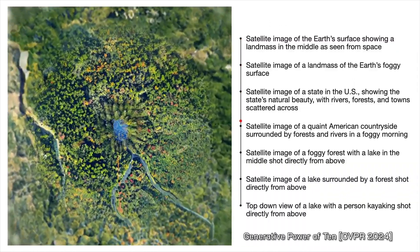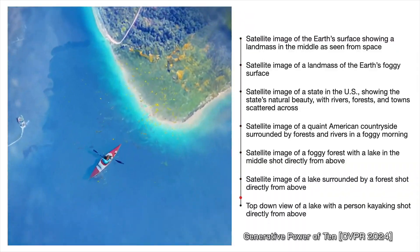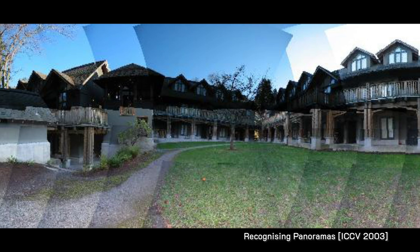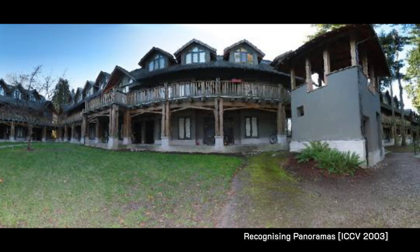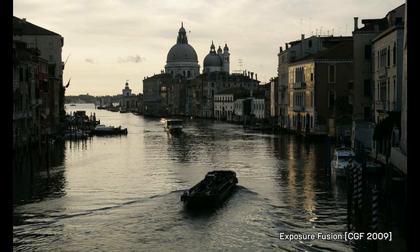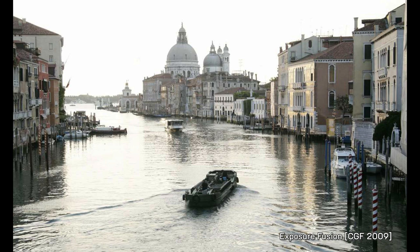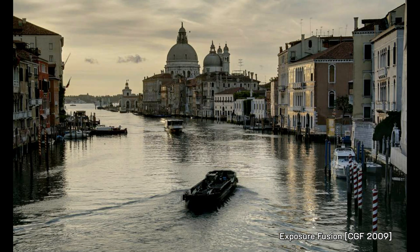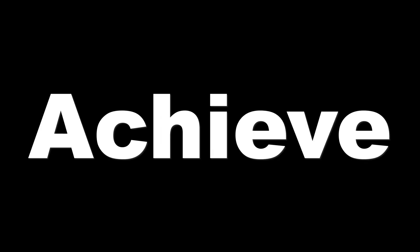We can blend image contents across multiple scales for extreme zooms, across multiple viewpoints for making a seamless panorama, and across multiple exposure levels for creating a high quality image efficiently without converting to HDR first. How do we achieve this?